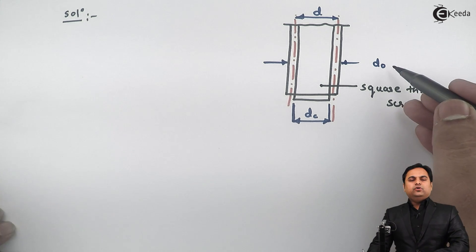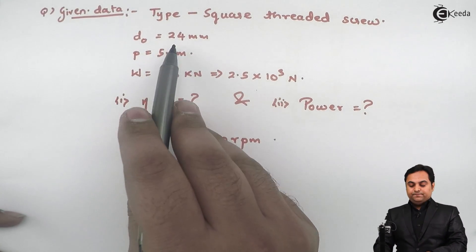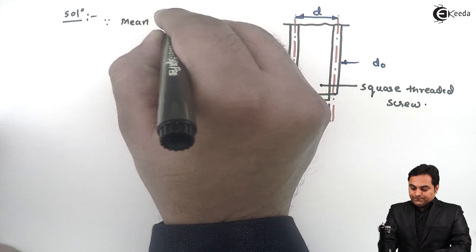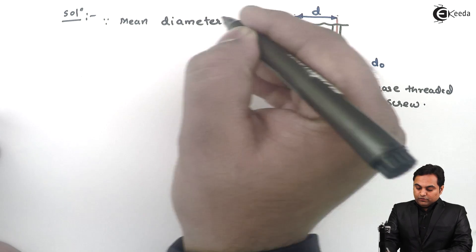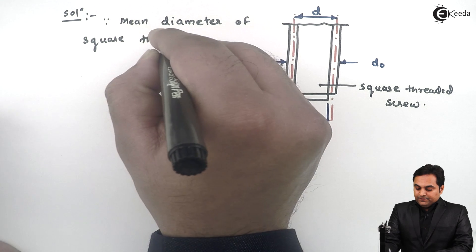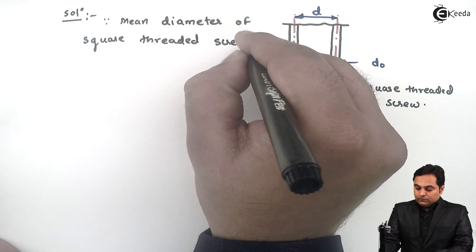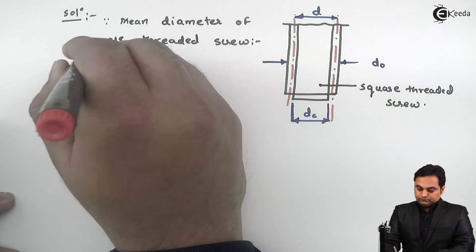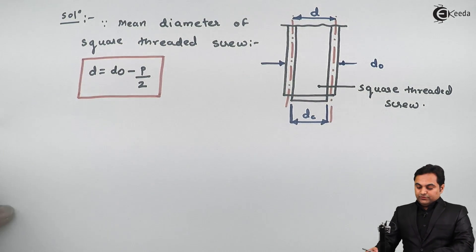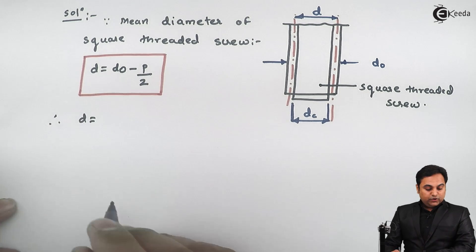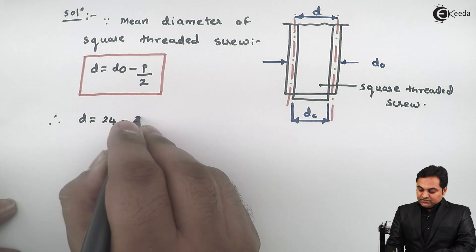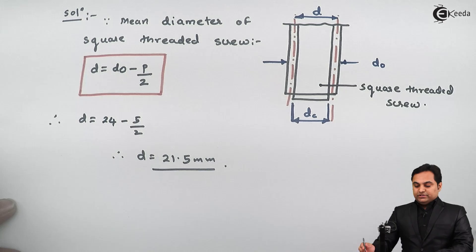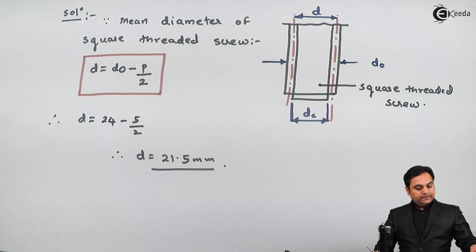Since I know the value of DO and pitch from the data, I will calculate the mean diameter. The mean diameter of a square threaded screw is given by the formula: d = DO minus pitch divided by 2. Using this formula: d = 24 − 5/2 = 21.5 mm. So the mean diameter of the square threaded screw is 21.5 mm.